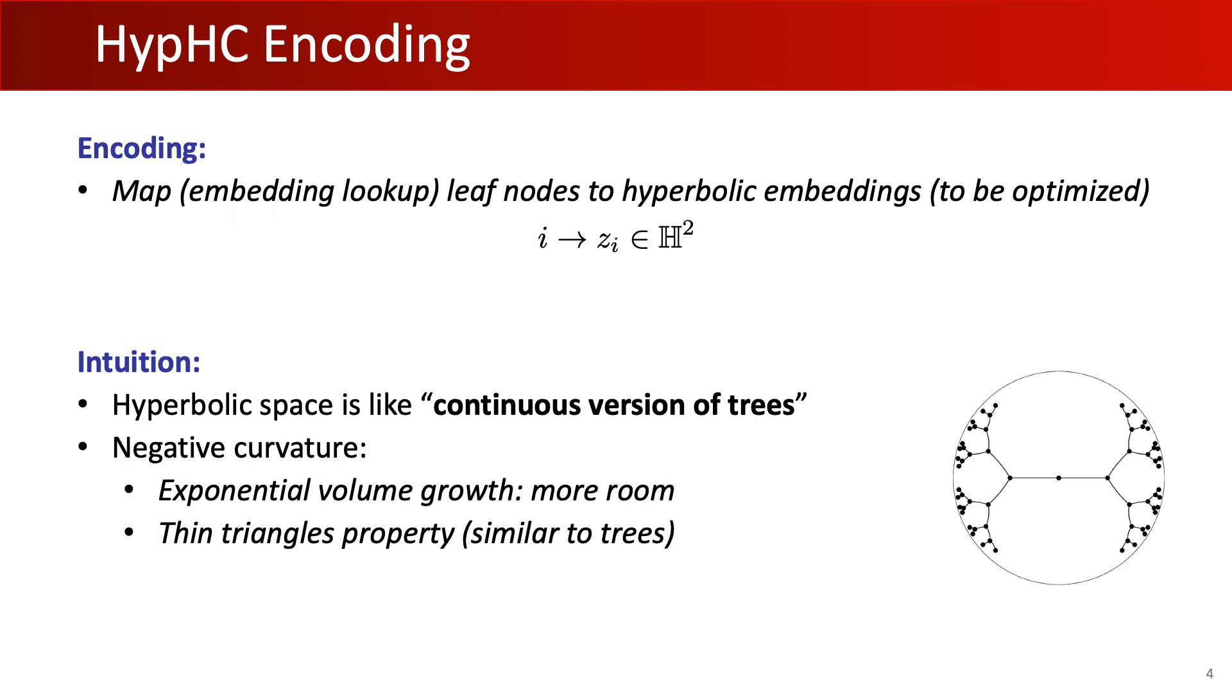The first step of HypHC is to assign a learnable hyperbolic embedding to each data point, that is, a leaf in the clustering tree. Our intuition is that because hyperbolic space can be thought of as a continuous version of trees, we can parametrize trees continuously using hyperbolic embeddings.